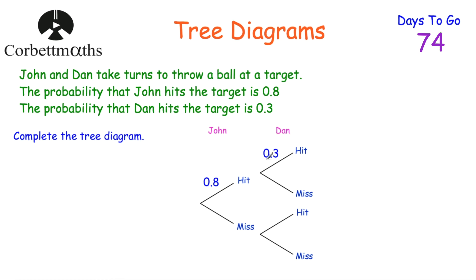What's fantastic about tree diagrams is they show us all the possible outcomes. John can hit it and Dan can hit it — that's hit-hit. John could hit it and Dan could miss — hit-miss. John could miss and Dan could hit — miss-hit. And finally, John could miss and Dan could miss — miss-miss. We've been asked to complete the tree diagram by writing the probabilities on the branches.